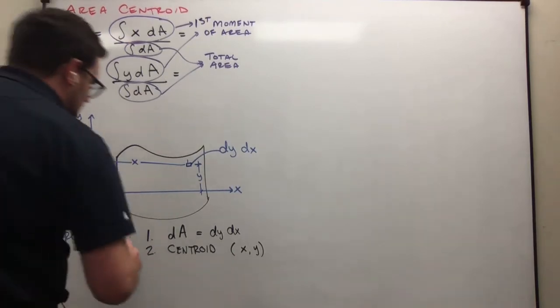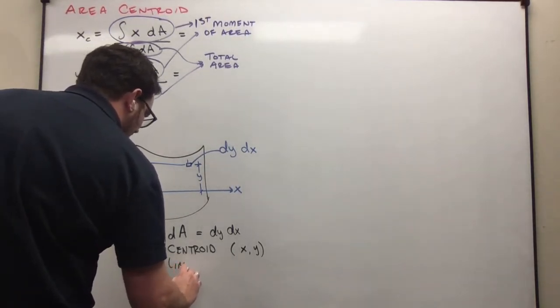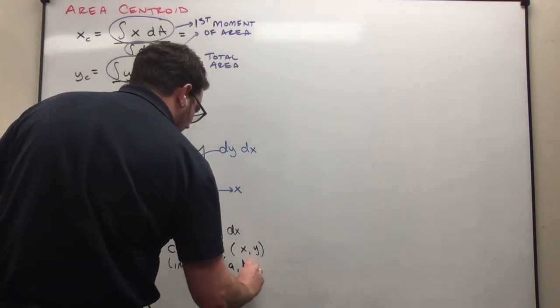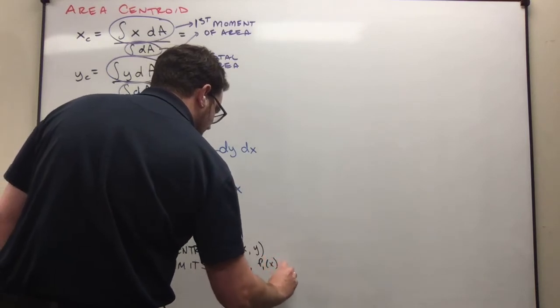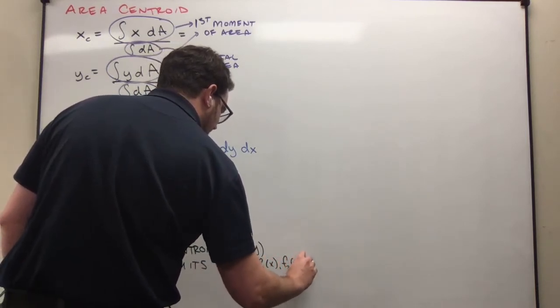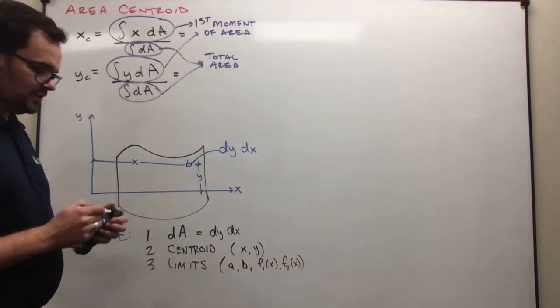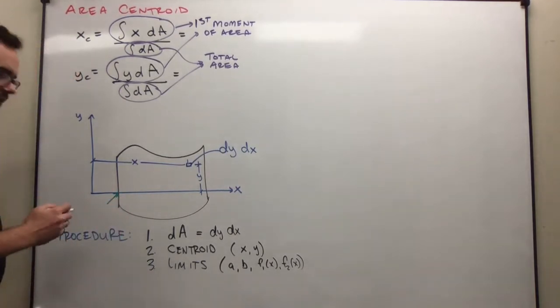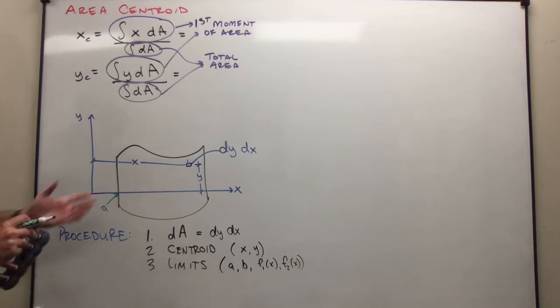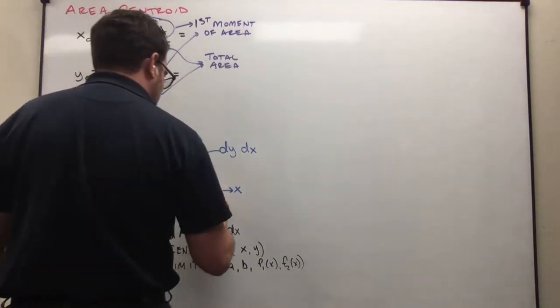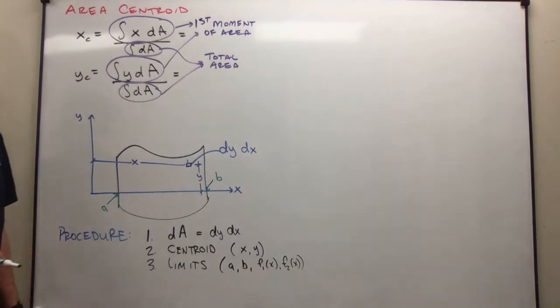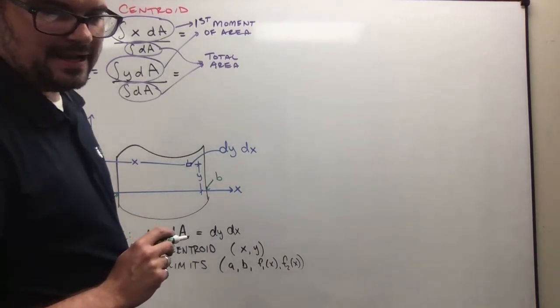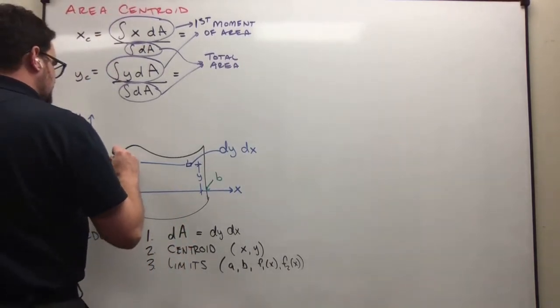Now, the next thing we're going to do is we're going to identify the limits of the shape. These are going to become our integration limits, and I identify four limits. So I've called them A, B, F1(x), and F2(x). A is going to be my minimum x value. So what's the smallest x value that the shape occupies? And then B is going to be the maximum x value that the shape occupies.